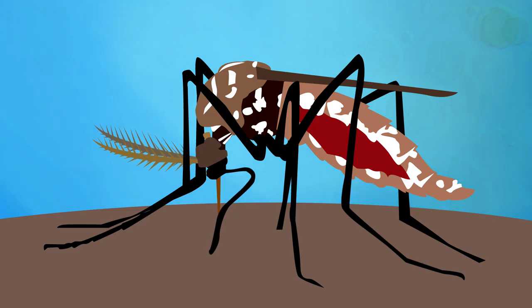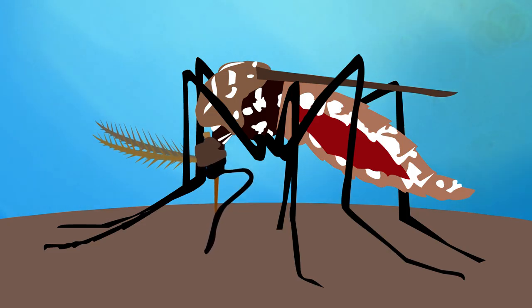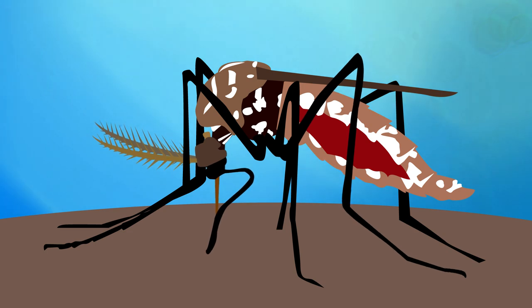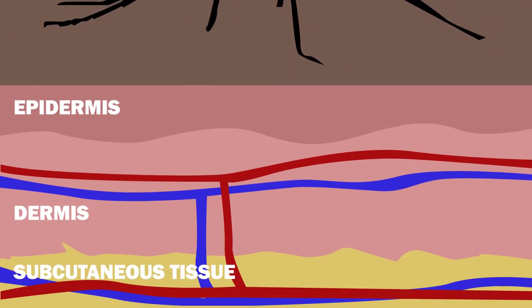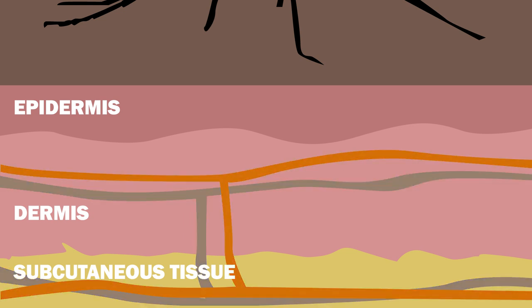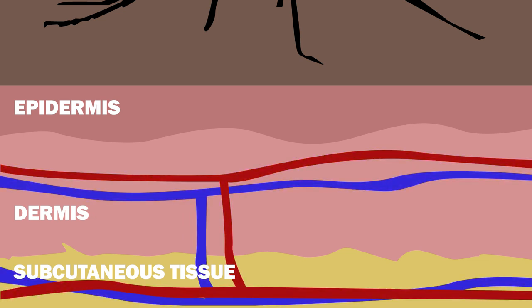The journey of the Dengue virus begins when an infected mosquito bites a human. As it feeds, the mosquito's saliva, which contains the virus, is injected. Some of the virus is injected into the bloodstream and some enters the epidermis and dermis.